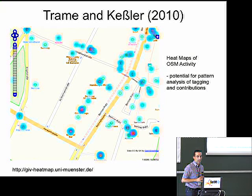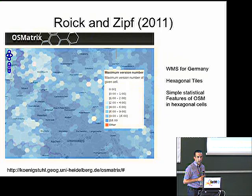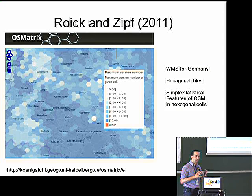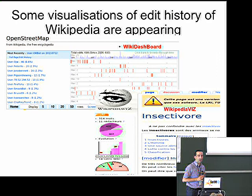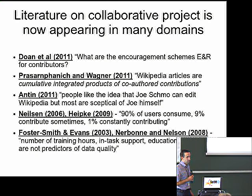At Münster, there's a nice application making heat maps of activity — showing the potential for looking at how these things are changing, though at the moment it's only looking at nodes. At Heidelberg, there will be a presentation looking at the different types of coverage that OpenStreetMap offers. Visualizations are also beginning to appear from Wikipedia, though they're not easy to produce.